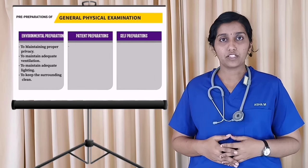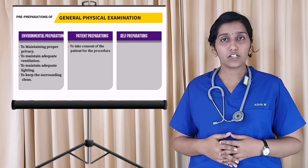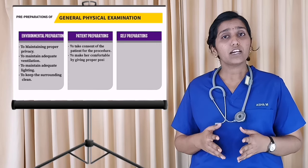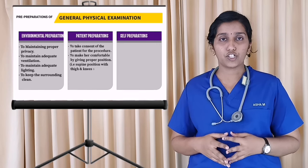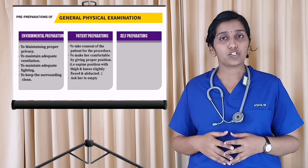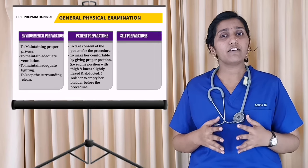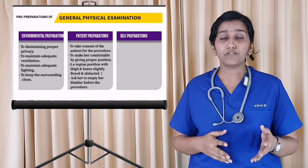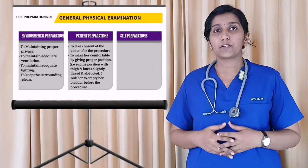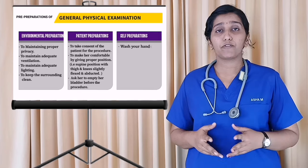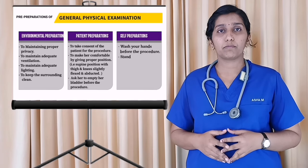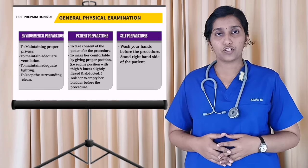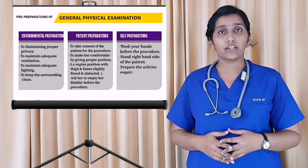Patient preparation includes taking the consent of the patient for the procedure, making her comfortable by giving proper position — that is, supine position with thighs and knees slightly flexed and abducted — and asking her to empty her bladder before the procedure. Self-preparation includes washing your hands before the procedure, always standing on the right-hand side of the patient, and preparing articles required for the assessment.